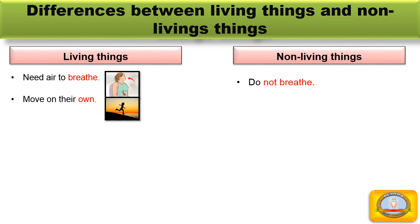Second difference: living things move on their own. Fish swim, birds fly, animals and humans can walk and run. Children, have you seen a mountain or a chair moving? No — because mountains and chairs are non-living things. Non-living things do not move on their own.